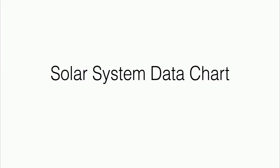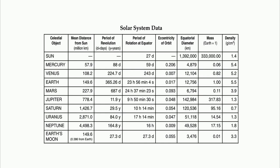In this video, we'll be looking at the solar system data chart found on page 15 of your Earth Science Reference Table. Here's our solar system data chart. It lists the sun and the eight planets in our solar system, along with Earth's moon. In addition to that, you have some other information that, without this reference table, you would be expected to memorize. So let's all give a round of applause to our reference table.